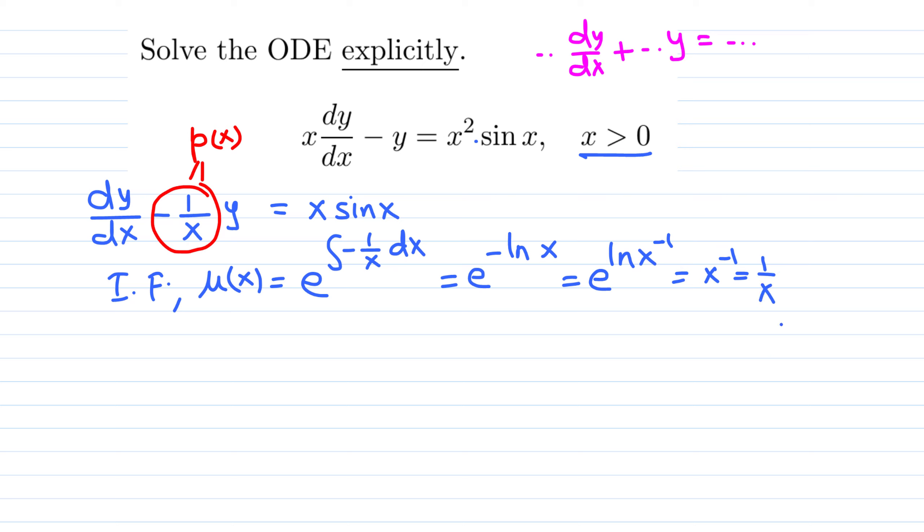We have the integrating factor. Now we multiply this ODE, this modified ODE, by the integrating factor. When we multiply through by this one, the left hand side automatically becomes derivative of a product, product of y dependent variable and integrating factor 1 over x. On the right side, multiply this by 1 over x, so x cancels, simply sine x survives there.